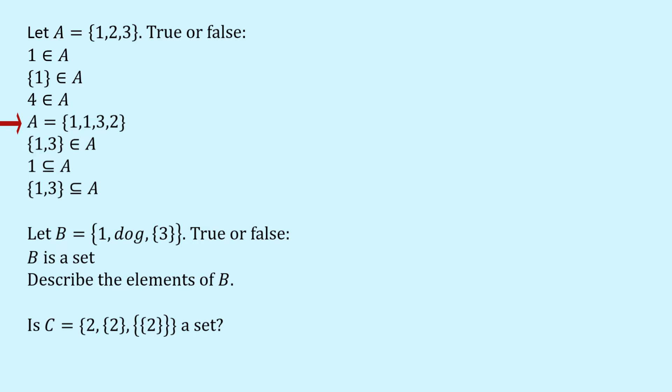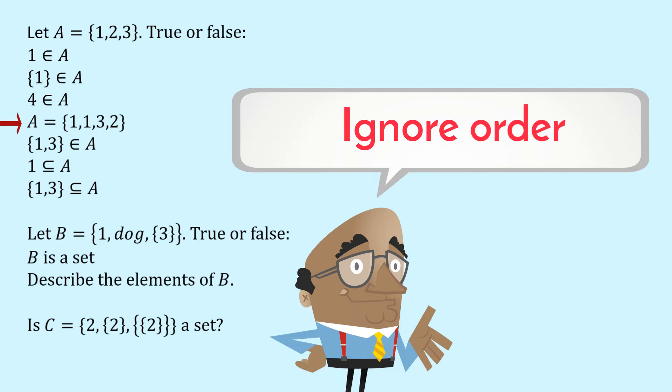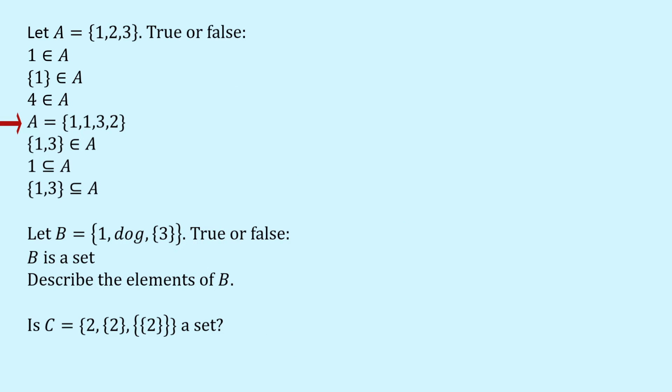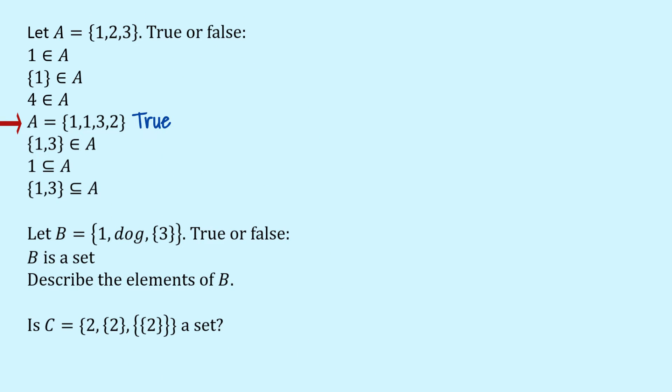What about this statement for A? Now this is true because with sets the first thing is that we ignore repetition. So if you want to write down the number 1 twice well that's fine. A still only got three elements the elements 1, 2 and 3. And also we ignore order. So the fact that I've put the 2 after the 3 doesn't change the fact that this set still contains three elements 1, 2 and 3 and so it is A. So this is true.